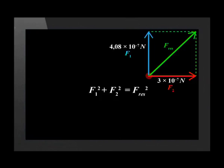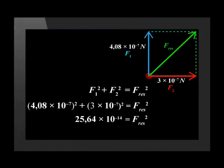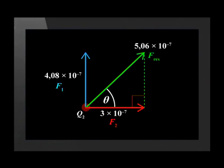We use Pythagoras' theorem. We substitute the values of F1 and F2 into the equation, and find that F squared is 2.56 times 10 to the minus 14. To calculate the magnitude of the resultant force, we get the square root, which is 5.06 times 10 to the minus 7 Newtons. Then we calculate the direction of the resultant force.